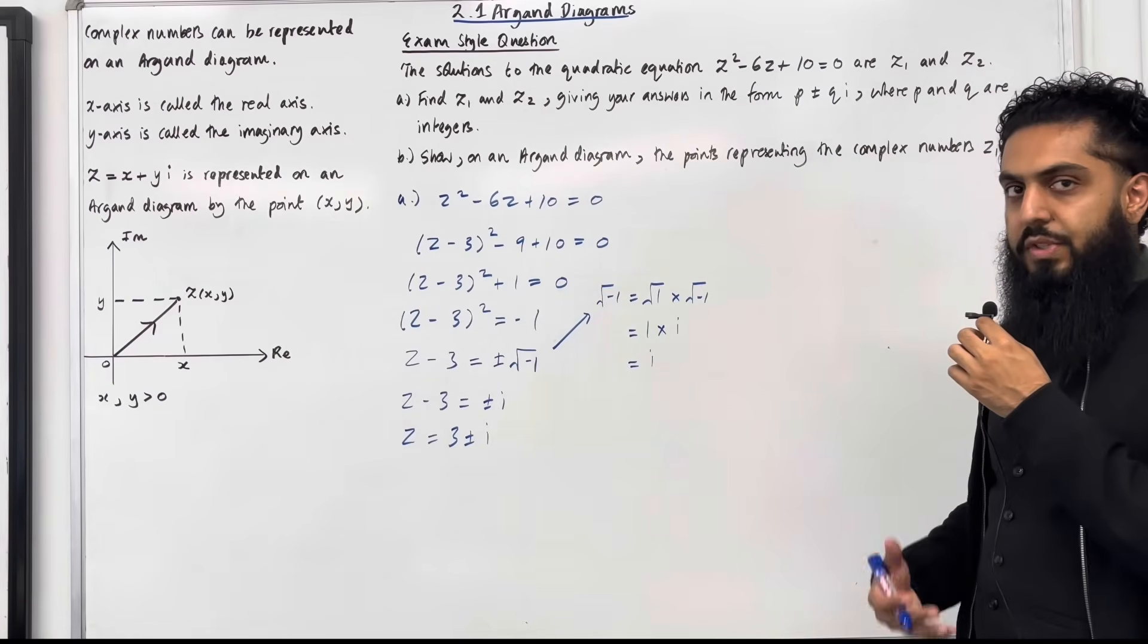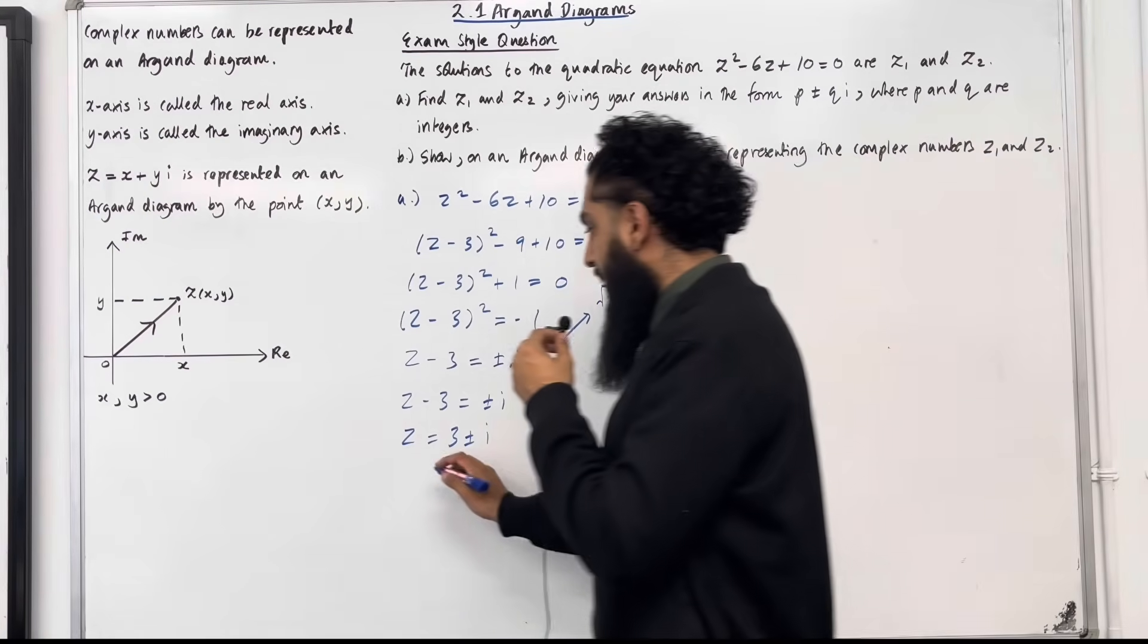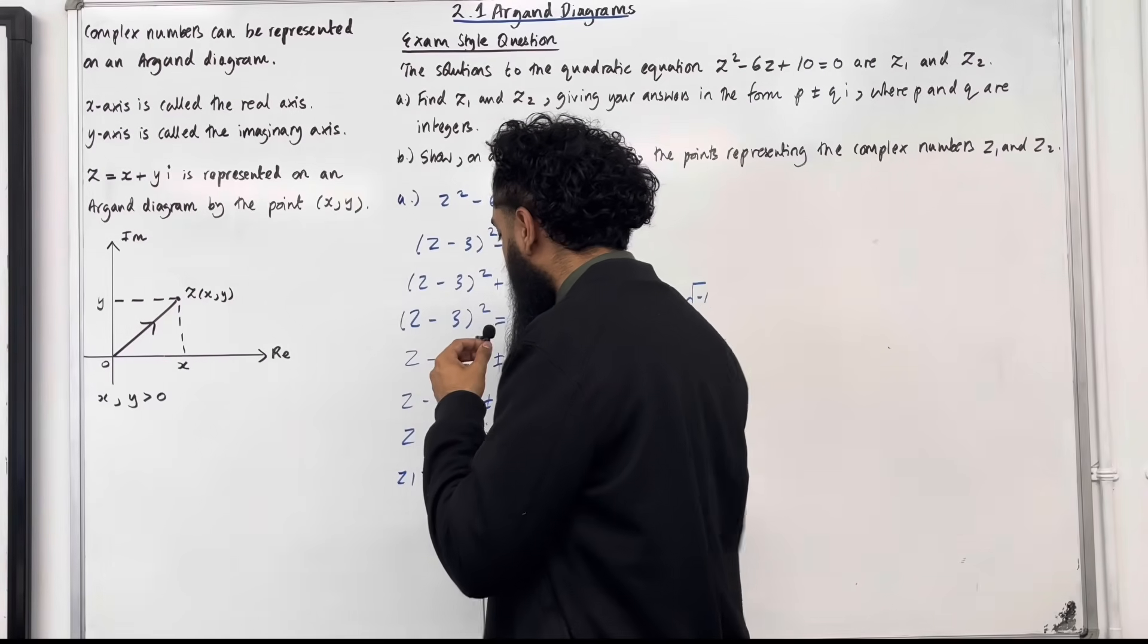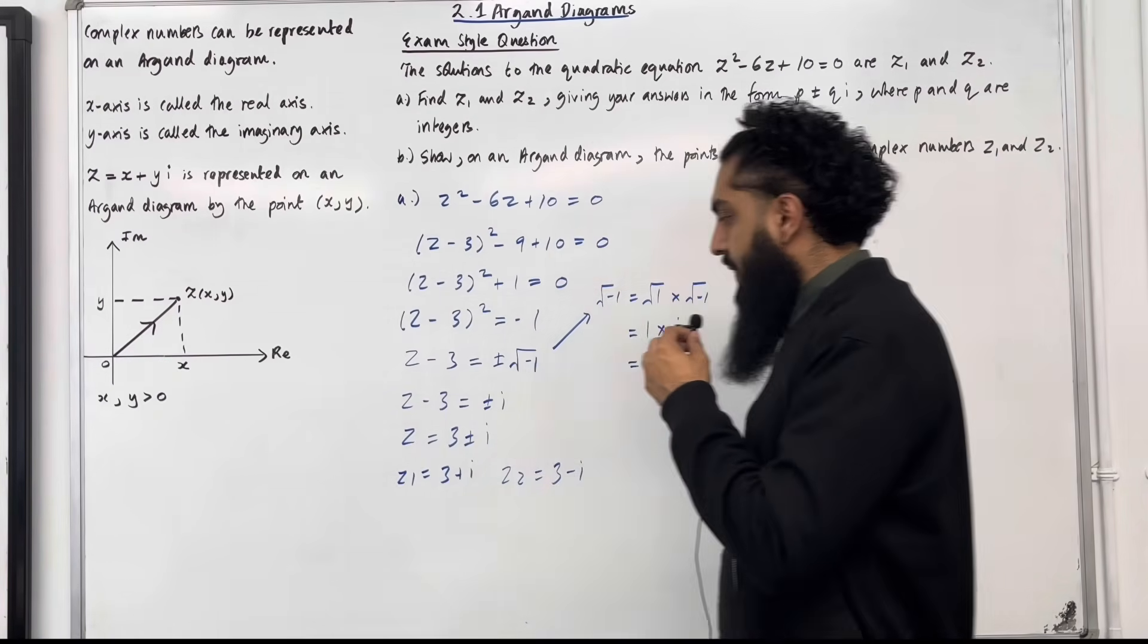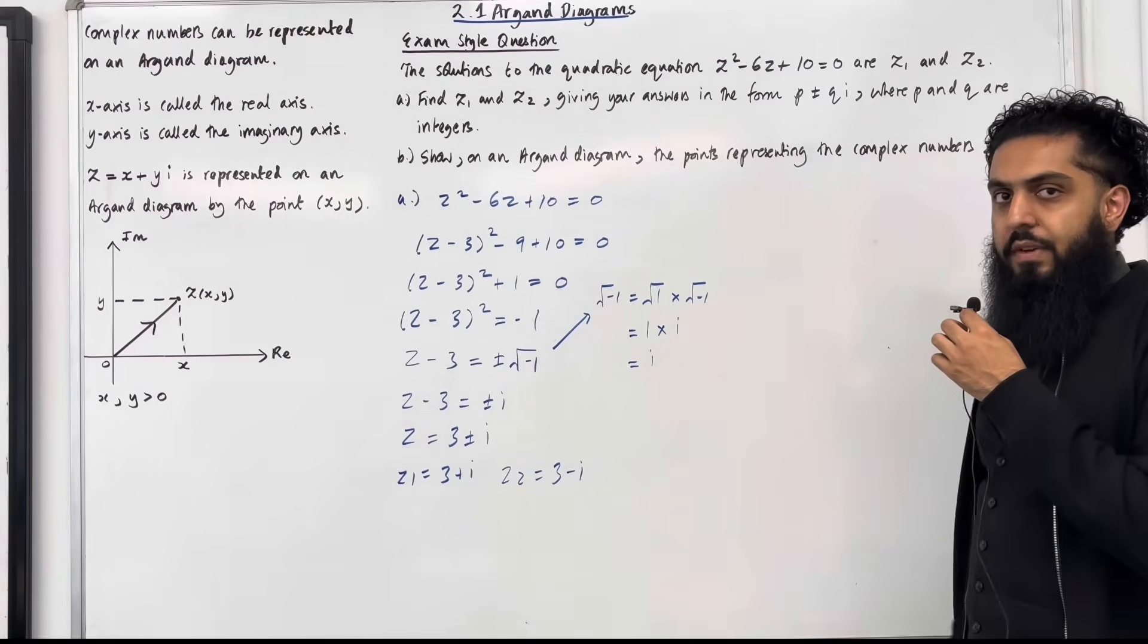Now I can deduce my solutions z₁ and z₂. So z₁ = 3 + i and z₂ = 3 - i or vice versa. This completes part A of the exam style question.